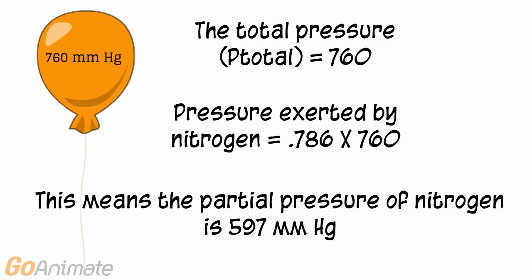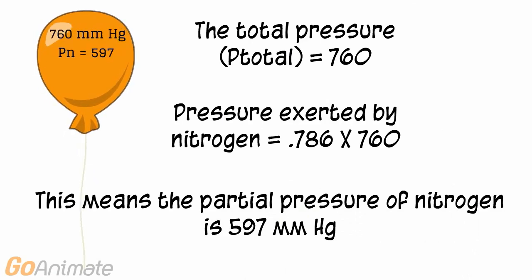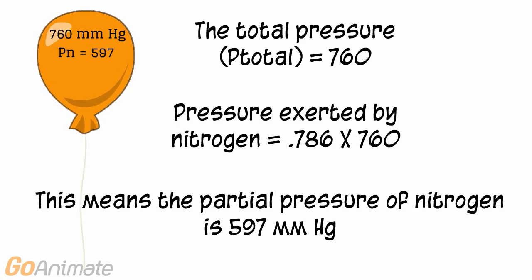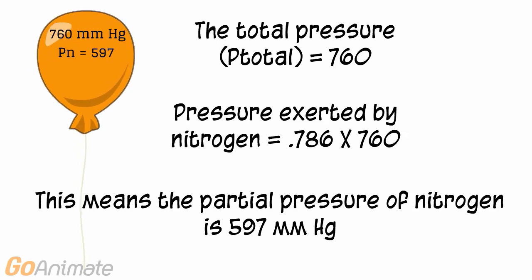If air is about 79% nitrogen, then the pressure exerted by nitrogen in the balloon is 0.786 times 760, which comes out to 597 mmHg. In other words, the PN2, or partial pressure of nitrogen, is 597 mmHg.